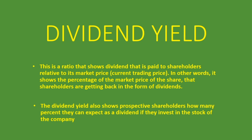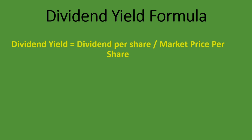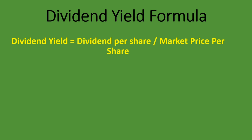In this lesson, we're going to be looking at an example of how to do the calculation for the dividend yield. The dividend yield formula is the dividend per share divided by the market price per share. The dividend per share is calculated by taking the amount of dividends paid out, divided by the number of shares in issue, and then dividing that answer by the market price per share.